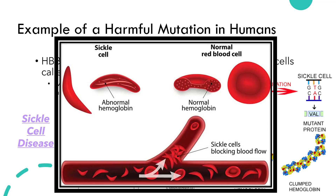This prevents the circulatory system from working properly — carrying blood, oxygen, food, and other substances throughout the body where they need to go — and can cause a person with sickle cell disease to be very sick. This is all because there was a mutation in their gene that contains the instructions for making the protein hemoglobin. The hemoglobin is made incorrectly and it clumps together in long strands, causing the shape of many blood cells to be sickle shaped. This causes the circulatory system to not work properly, leading to other issues with other body systems.